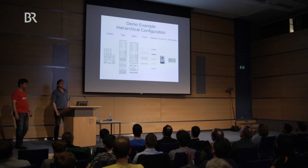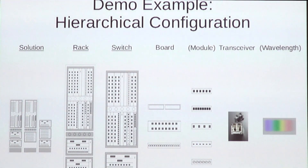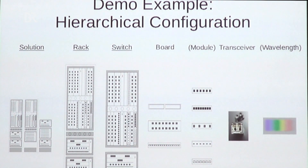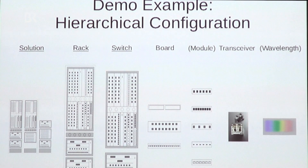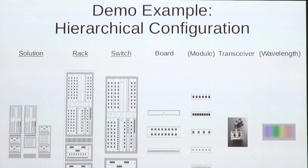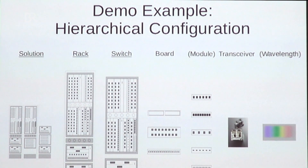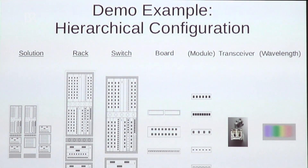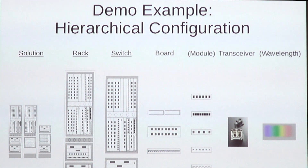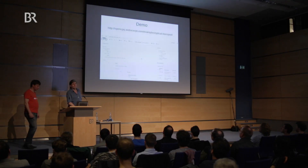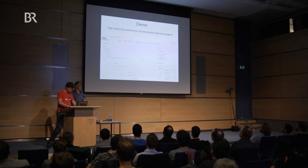This is the setting. We have several levels of components. Starting in the middle at the switches — a switch forwards these packets. You can plug in boards into these switches, and then transceivers onto these boards. These transceivers support different wavelengths. You then put your switches into racks, and you can build up a solution from multiple racks. We'll show you this in the demo.